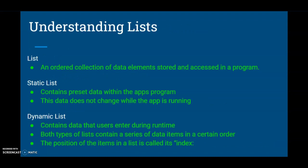In order to understand our lists, we have to understand the two different types of lists we can use when designing an app. A list is any type of ordered collection of data elements that can be stored and accessed within our program. Today we're going to be using a list known as a static list. Static lists contain preset data within the app's program — this data cannot change while the app is running. We are going to be creating a data list of different actions that our user can perform during our charades game.